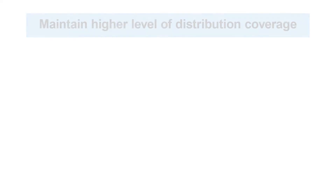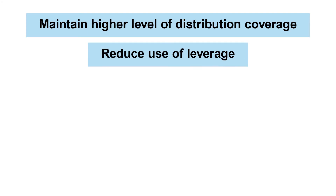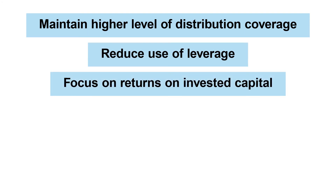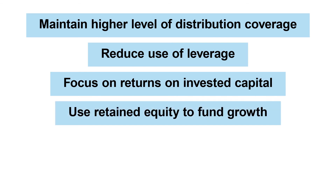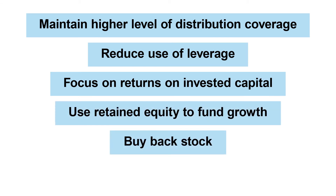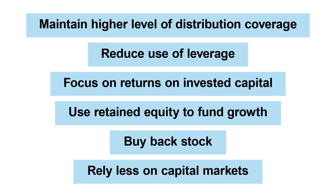Some management teams have begun to address the flaws of the traditional model and are taking a new approach to managing midstream energy businesses. This 2.0 version of MLPs starts with merging the general and limited partners and removing those IDRs. This reshapes the incentive structure for management teams and better aligns the interests of all shareholders. Without the IDRs and the need to pay an ever greater share of distributions to GPs, businesses have flexibility in how they allocate capital. They're more likely to maintain a higher level of distribution coverage, reduce the use of leverage, focus on core assets and returns on invested capital, use retained equity to fund growth, buy back stock, and most importantly, rely less on the capital markets.